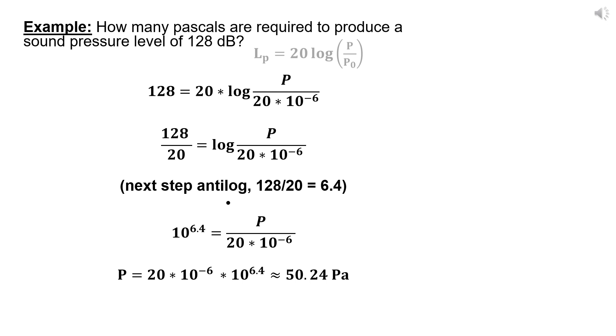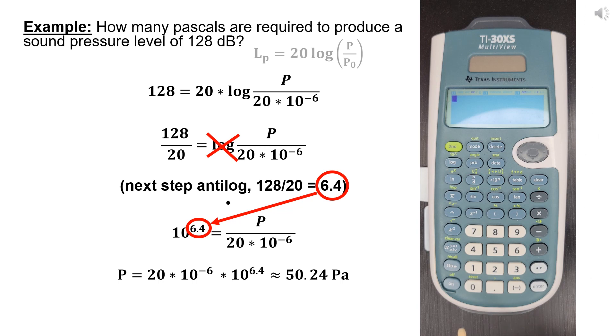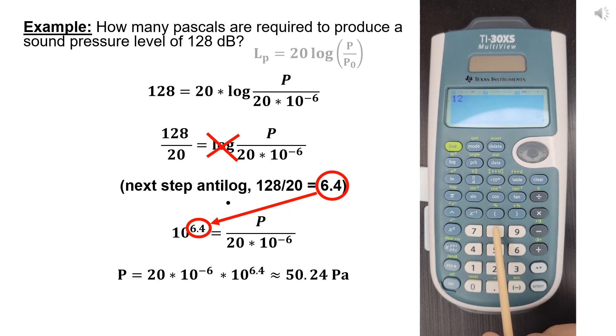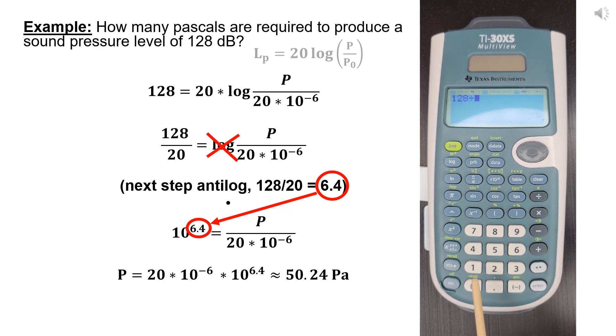For example, how many pascals are required to produce a sound pressure level of 128 decibels? To solve this equation, we have to use the antilogarithm, or antilog, to get rid of the logarithm from the right side of the equation that contains the unknown P value. And we do this by raising 10 to the power 6.4, and then solving for P, which value result is approximately 50.24 pascals.